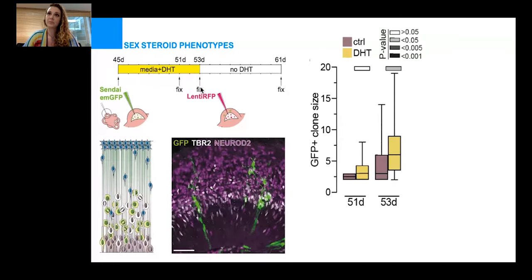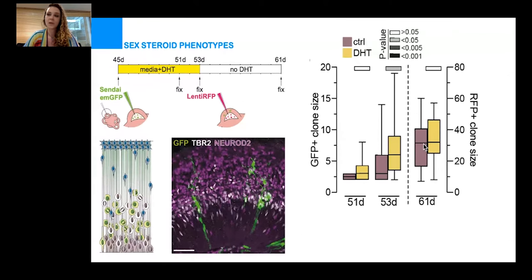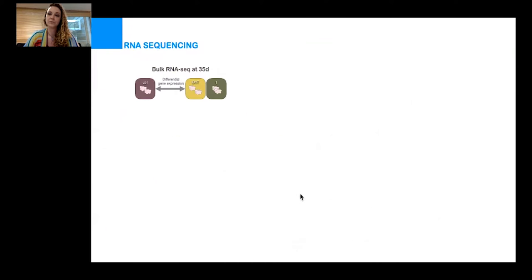We then labeled a new population of radial glia with RFP-expressing lentivirus and removed DHT from the media. After another eight days, the size of the RFP clone was the same between DHT and control organoids. This shows us that DHT increases the pool of radial glia by promoting symmetric division, increasing the clone size. What is also very interesting is this process is transient and dependent on DHT. If you remove DHT, radial glia don't proliferate in a symmetric manner anymore.